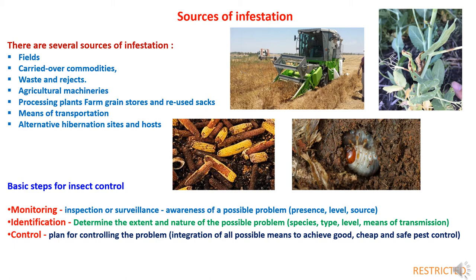Agricultural machinery are another source — if using harvesters, implements, or processors in the fields and infested grains are present, they may carry insects to storage points. Transport means are also a source of infestation, so transport means should be thoroughly cleaned. There are also alternative hibernation sites and hosts from where the spread is taking place.